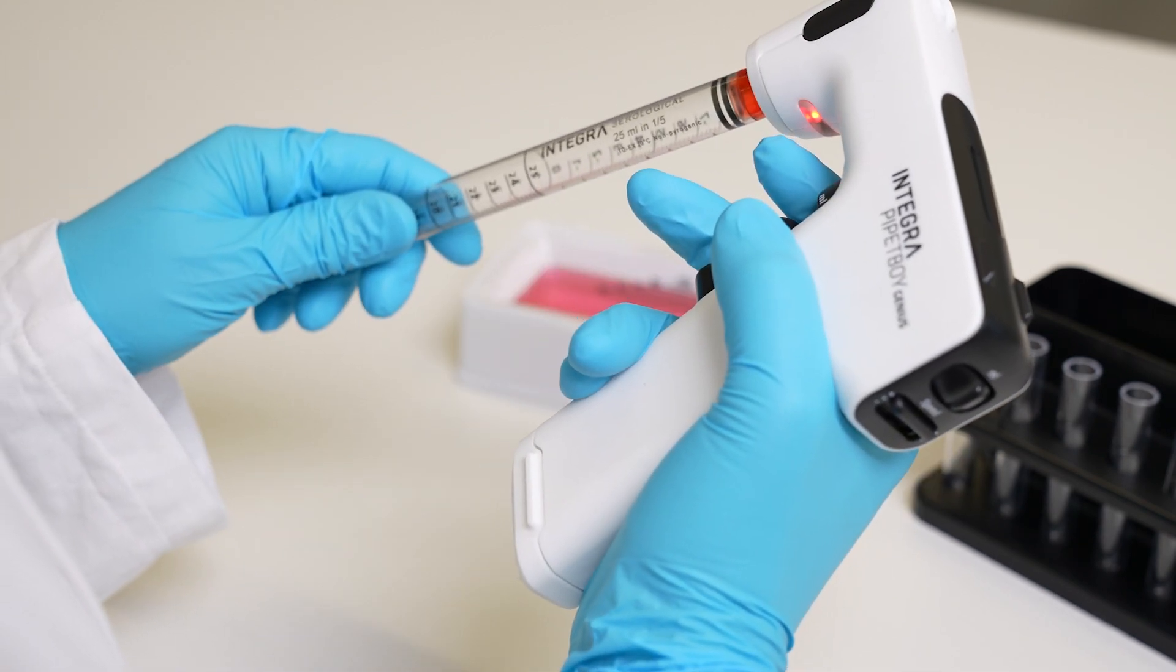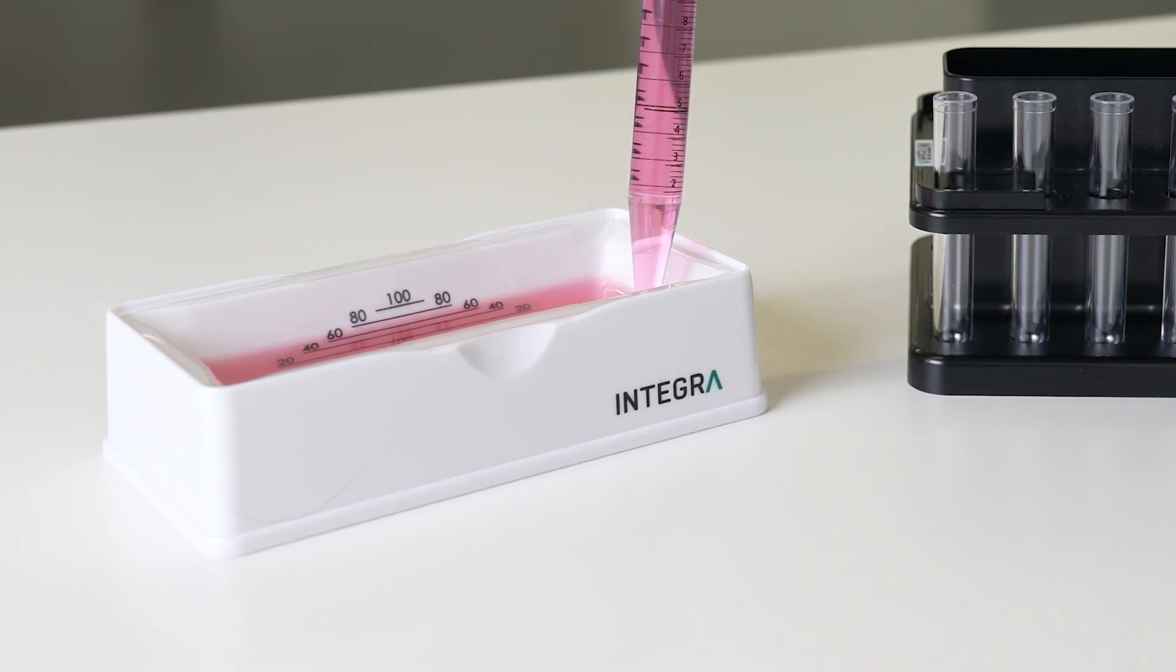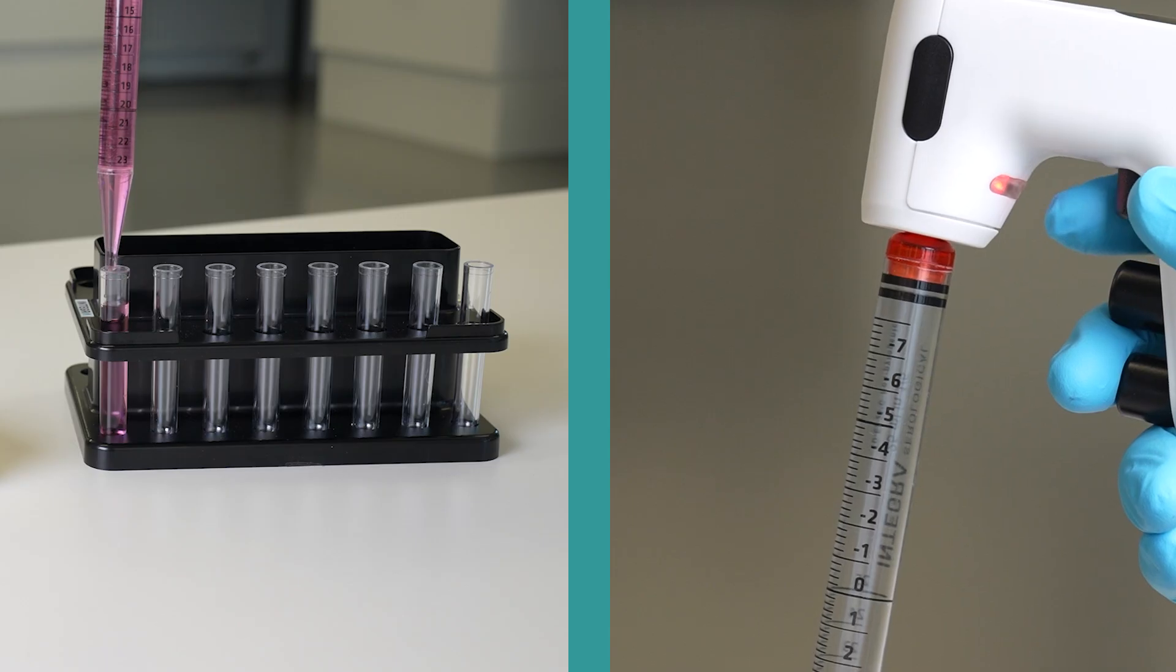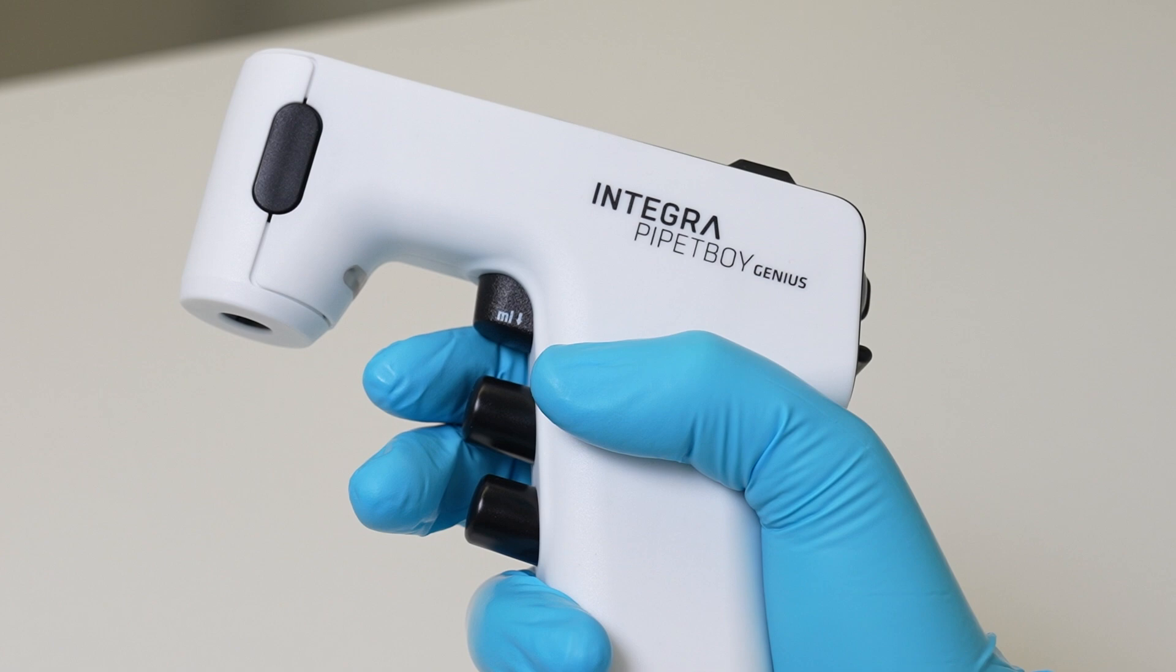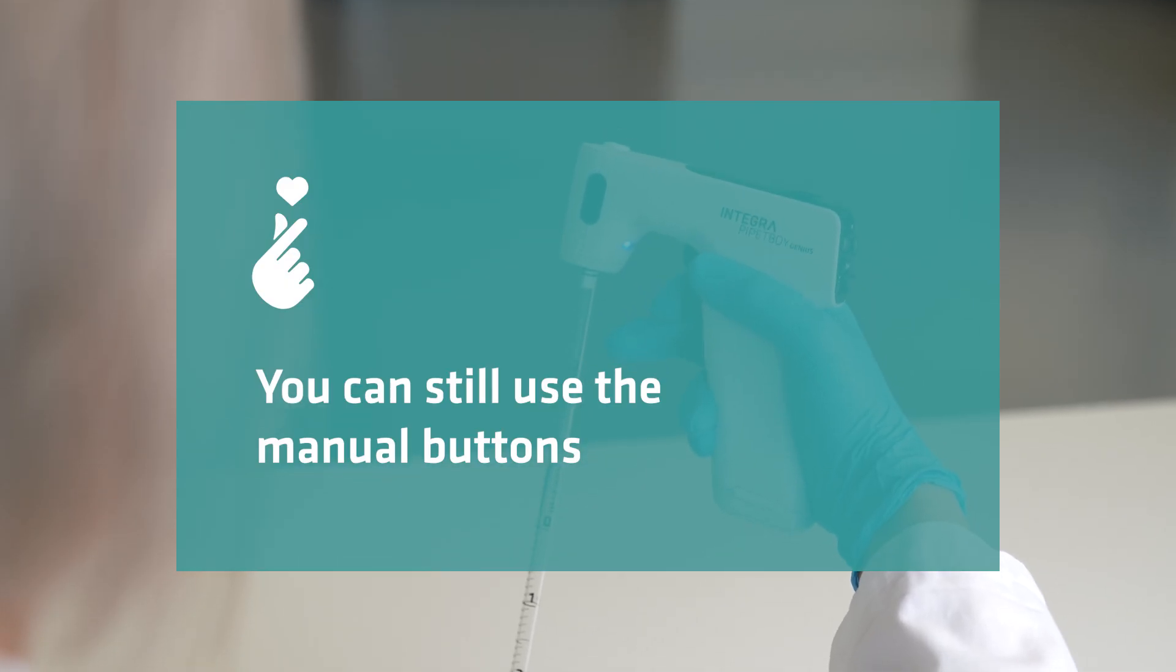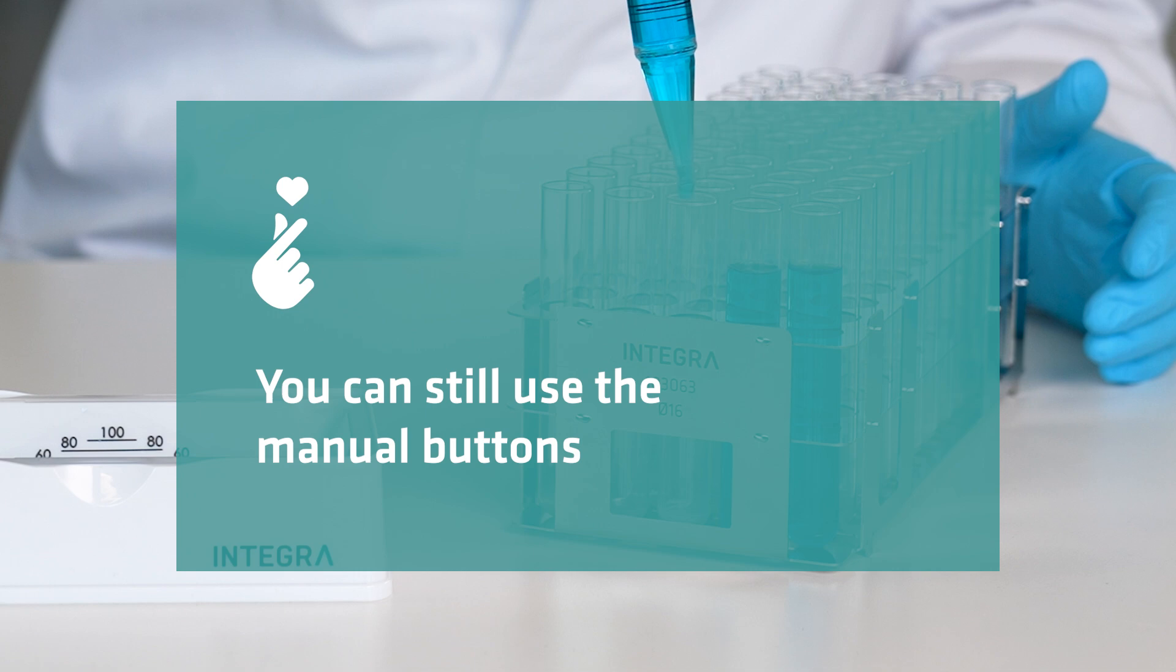All you need to do now is aspirate as much as you wish and simply press the repeat dispense button for each dispense. Just press the aspirate or dispense button to cancel a dispense if you've made a mistake. Just a heads up: you can use the aspirate and dispense button for your manually controlled workflow at any time.